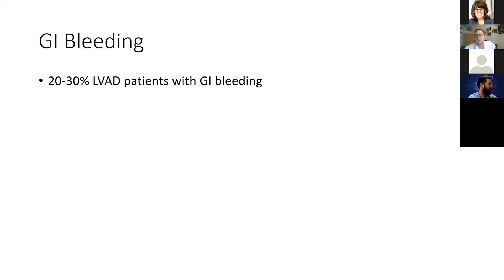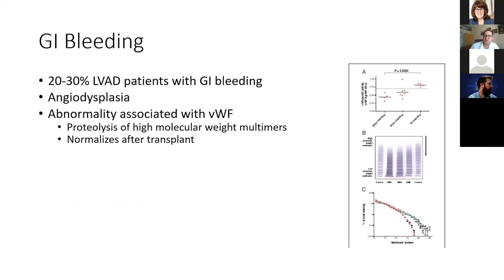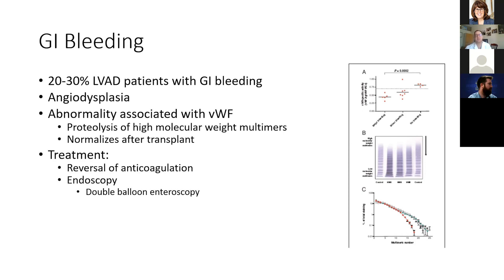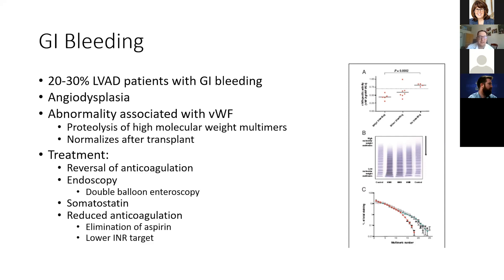GI bleeding affects 20 to 30% of patients with continuous flow pumps. It is multifactorial: non-pulsatile flow leads to angiodysplasias of the small intestine; this is coupled with platelet dysfunction and destruction of high-molecular-weight von Willebrand multimers from the shear forces of the pump; and patients are on Coumadin. Treatment involves reversing anticoagulation and performing endoscopy — often requiring double balloon enteroscopy to access the small intestine. Sometimes somatostatin analogs are used to reduce GI bleeding rates. With recurrent GI bleeding, we lower the INR target or eliminate aspirin.